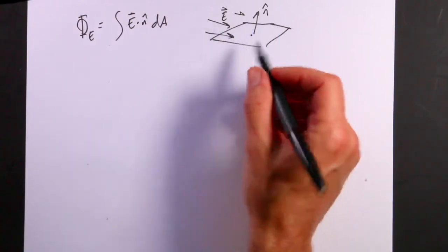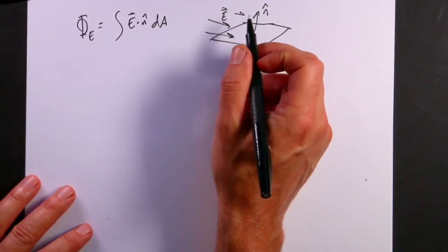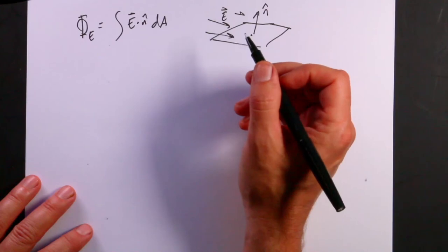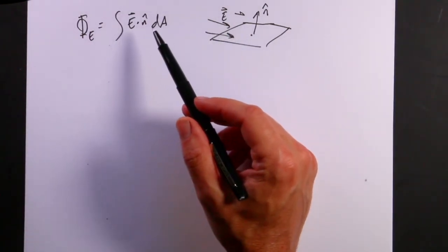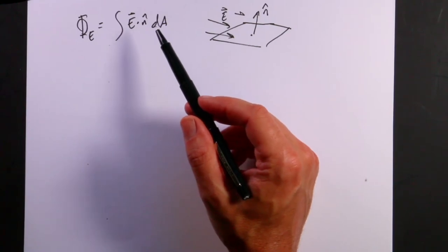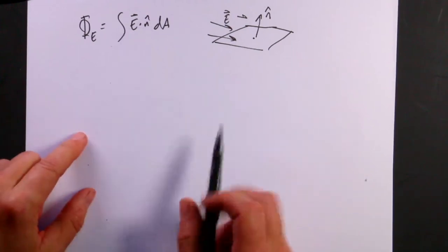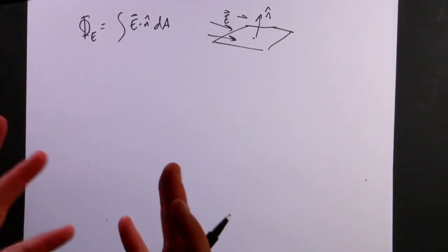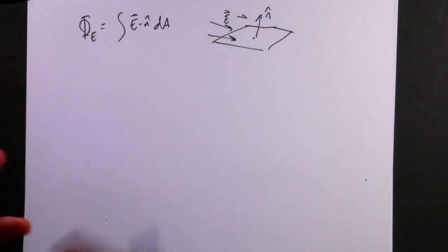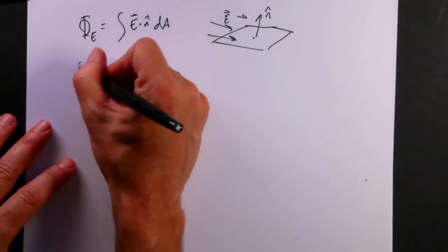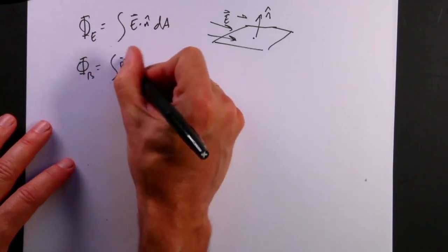Gauss's law for magnetism: the magnetic flux through any closed surface is always zero — ∮B·n̂ dA = 0. That's because there are no magnetic monopoles; magnetic charges always come in pairs. The simplest magnetic field looks like the electric field of a dipole. We always have two poles, so the flux through any closed surface cancels out.